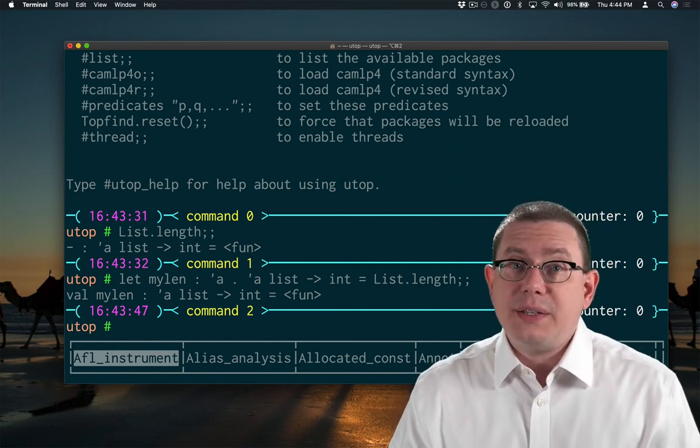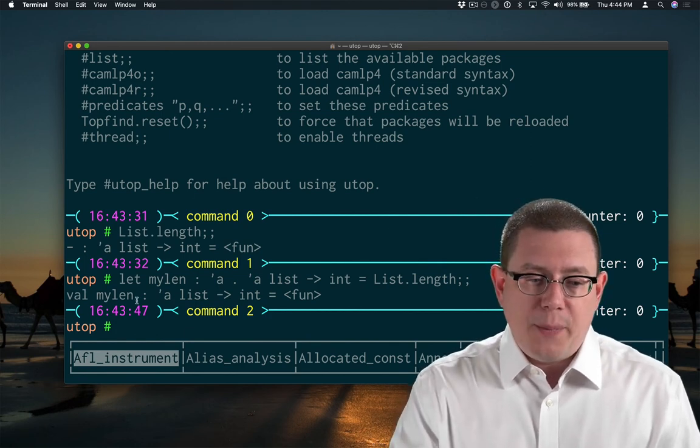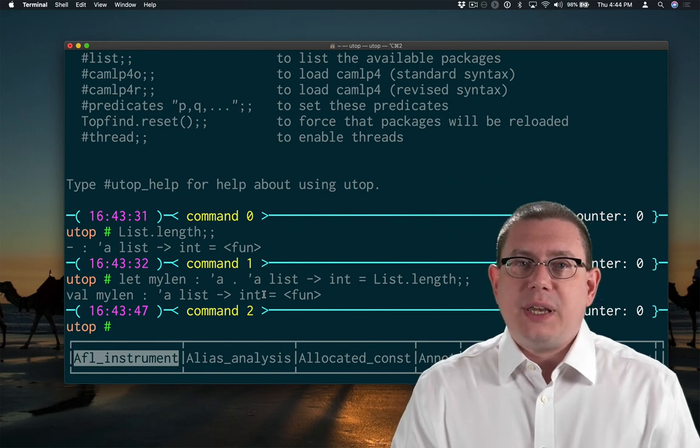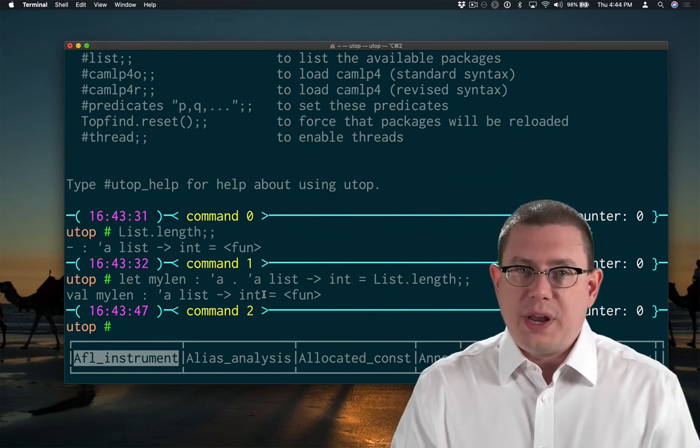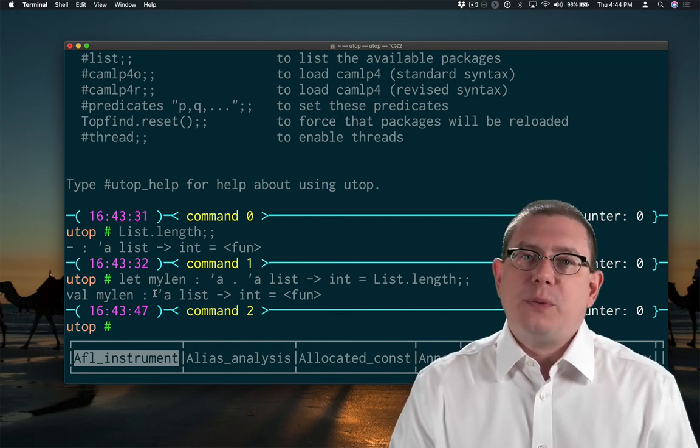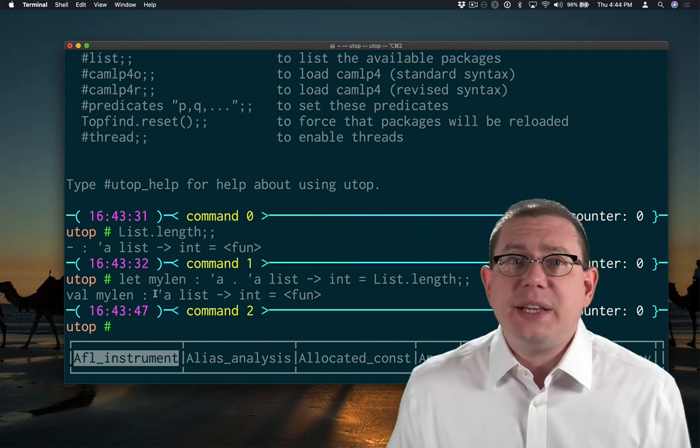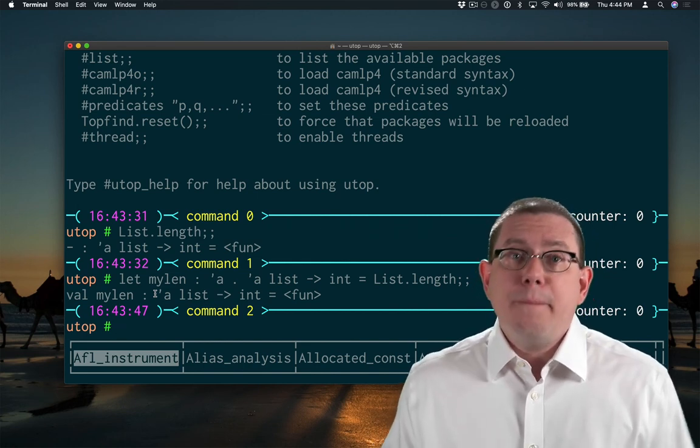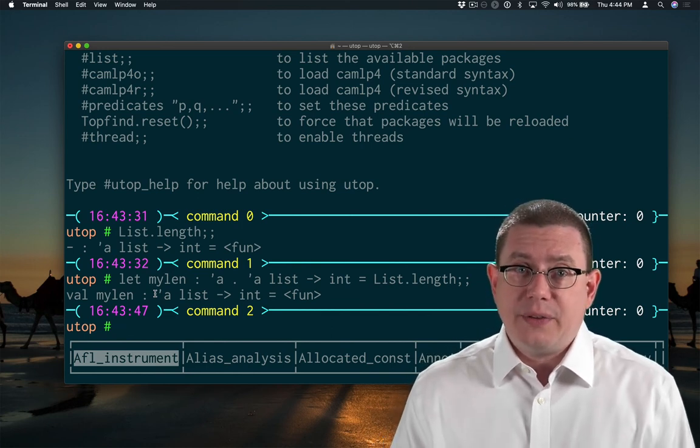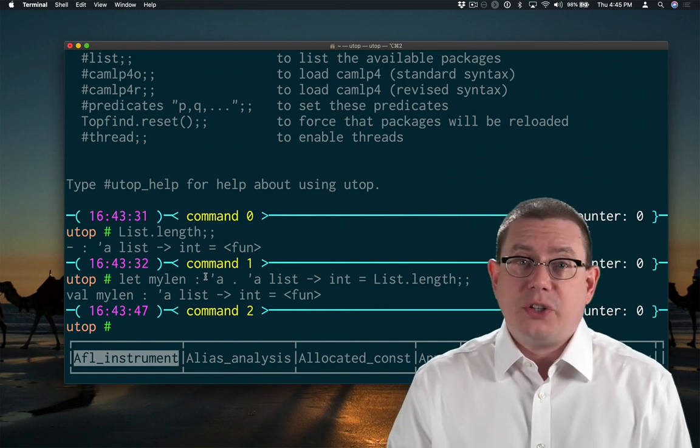So what's going on here is that implicitly the type scheme is always there. When OCaml outputs something like this with alpha list arrow int, implicitly any type variables that are showing up there are really quantified as part of a type scheme that OCaml just doesn't bother to print. And it doesn't bother to print it because it would just be extraneous information. It's always there. Most programmers don't need to know about it. So there's really no reason to print it out. But if you ever want to manually put it in like I did here, you actually can.